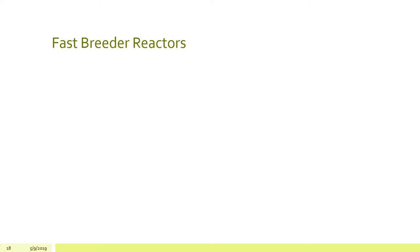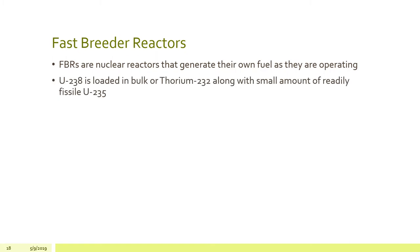One other possible way of producing nuclear fuel is referred to as fast breeders or fast neutron reactors. And those are reactors that generate their own fuel source as they're operating. And they utilize uranium-238, which is the abundant isotope of uranium, and bulk load it, as well as potentially thorium-232, along with a small amount of readily available fissile uranium-235 as kind of a seed.